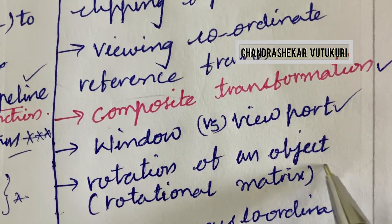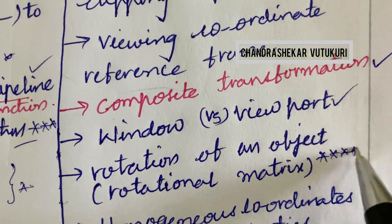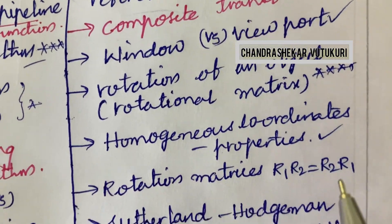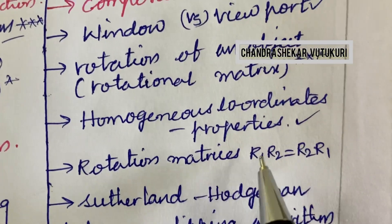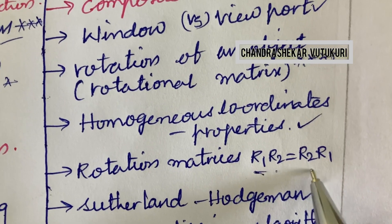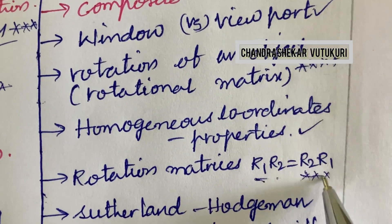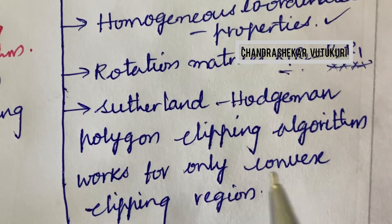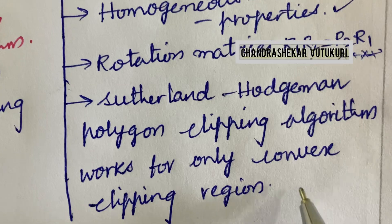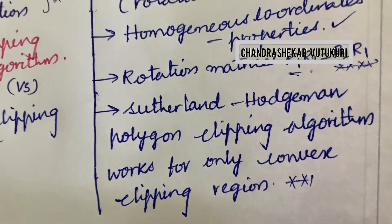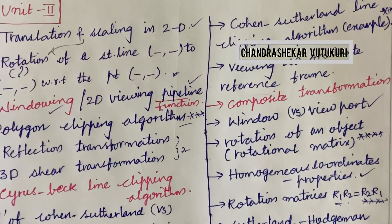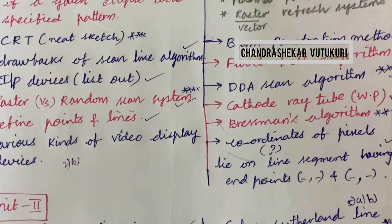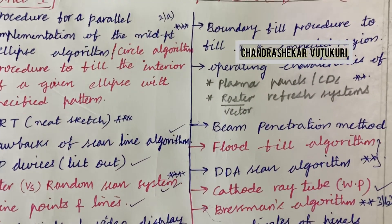Rotation of an object and working out its rotational matrix — said to be a short question. Homogeneous coordinates and their properties — short question. Determine the rotation matrix and prove that R1·R2 equals R2·R1 — such questions will be damn sure this time. Liang-Barsky polygon clipping algorithm works only for a convex clipping region — explain this term. These are the gunshot questions, highlighted with a star mark. Please concentrate and work these out, as this is one of the scoring subjects.